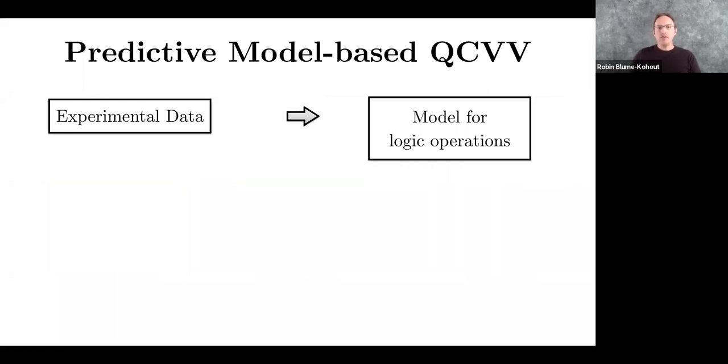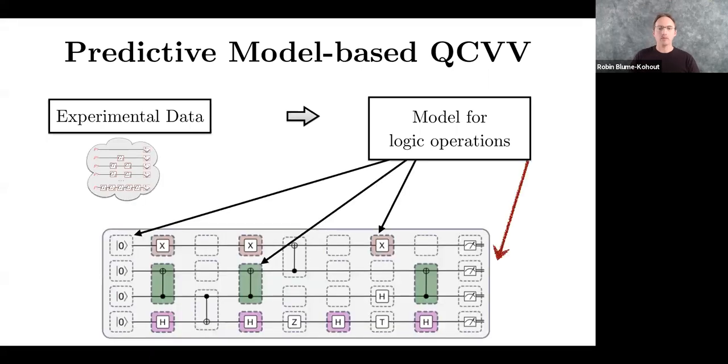So predictive model based quantum characterization verification and validation follows this simple template. You start by taking some experimental data and then you use that experimental data to infer or fit the parameters of a model for your logic operations. And logic operations include gates, measurements, readouts, state initializations, all the various things that you can do logically on a quantum computer.